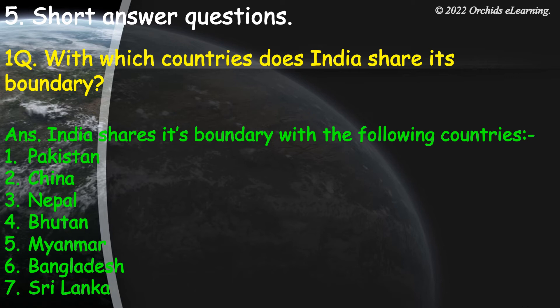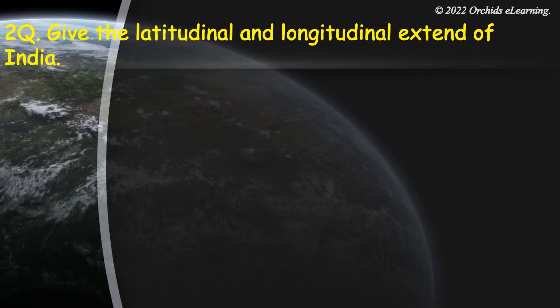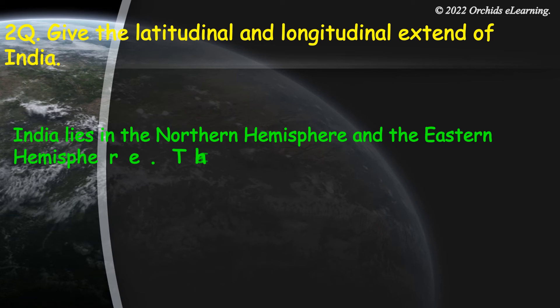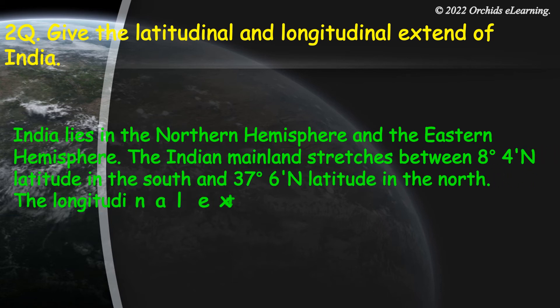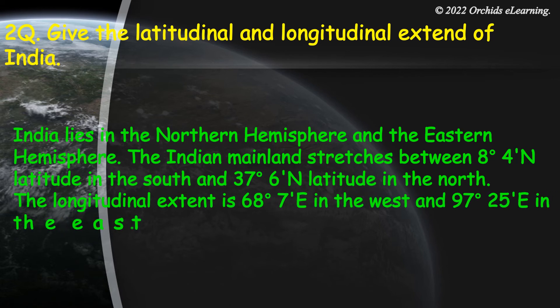Give the latitudinal and longitudinal extent of India. India lies in the northern hemisphere and the eastern hemisphere. The Indian mainland stretches between 8°4'N latitude in the south and 37°6'N latitude in the north. The longitudinal extent is 68°7'E in the west and 97°25'E in the east.